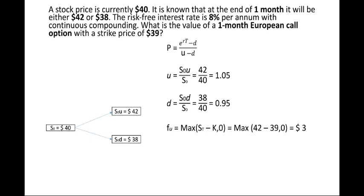Now calculating the value of the European call option: a call option is exercised when the spot market price on the date of maturity is greater than the strike price. The strike price is $39 and the upward price is $42. So fu = max(St − K, 0) = max(42 − 39, 0) = max(3, 0) = 3.